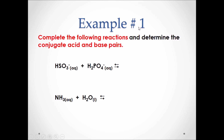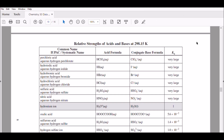Example number one: complete the following reaction and determine the conjugate acid and base pairs. Pause the video and attempt this example. In our first chemical equation, we have to determine which reactant is the strongest acid. To do so, we need to use the strength of acids and bases table in our Chemistry 30 data booklet, found on pages eight and nine.